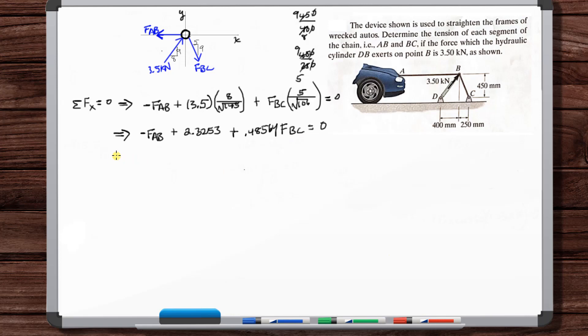So what we have is we've got F_AB minus 0.48564 F_BC is equal to 2.3253.